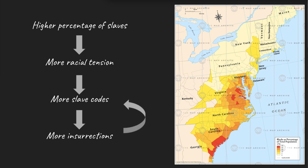While increased slave codes led to rebellions, rebellions led to even more slave codes. Following the Stono County Rebellion, new laws were passed which prohibited slaves from growing their own food, assembling in groups, earning money, or learning to read. The more slave codes, the higher risk of rebellion. And thus, a unique slave system was born in the South, based on race and heavy oppression.